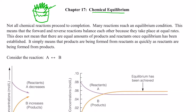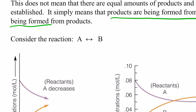It's important to understand that not all chemical reactions proceed to completion. Many reactions reach what we call an equilibrium condition. This simply means that the forward and reverse reactions balance each other out because they take place at equal rates. This doesn't mean there are equal amounts of product and reactant. Once equilibrium has been established, it simply means products are being formed from reactants as quickly as reactants are being formed from products. So if A forms B — with the arrow going both ways — when those two rates equal each other, we say we have reached an equilibrium.